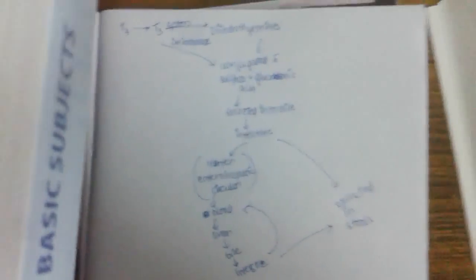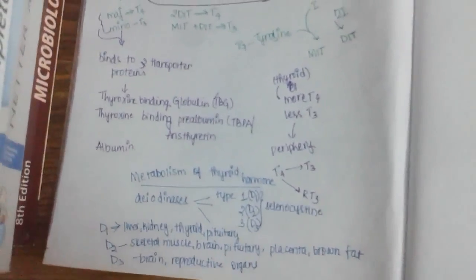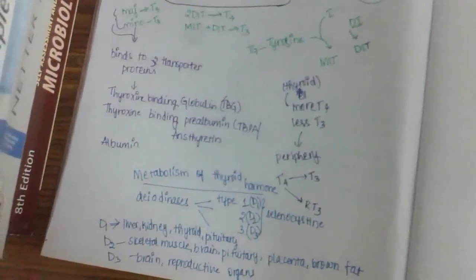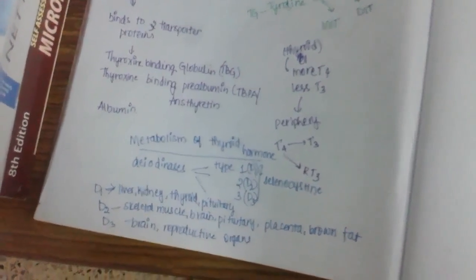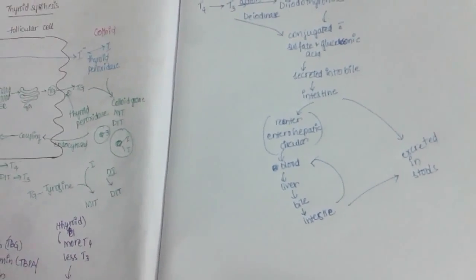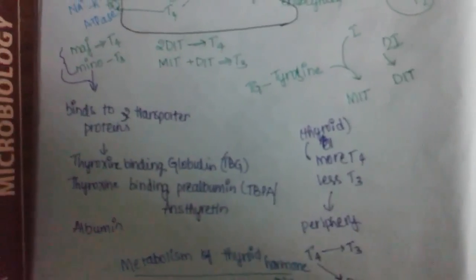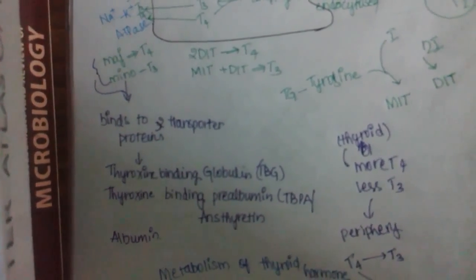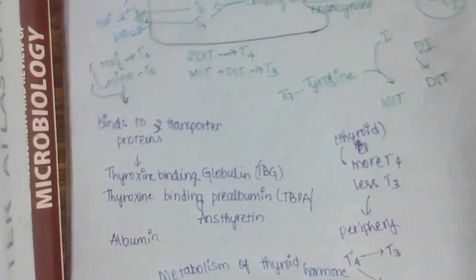To summarize: in today's and the previous lecture, we discussed the synthesis of thyroid hormones, their transport from the blood to target cells, the active and inactive forms of thyroid hormone, and the metabolism and excretion of thyroid hormones in detail. In our next class, we will discuss the physiological and pharmacological actions of thyroid hormone.